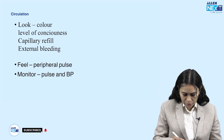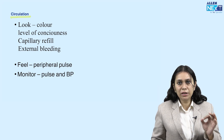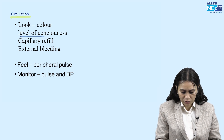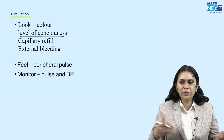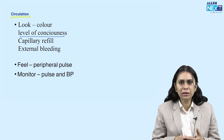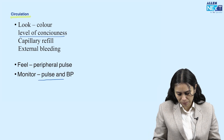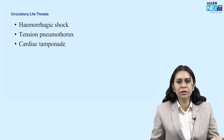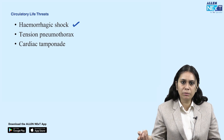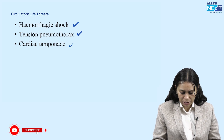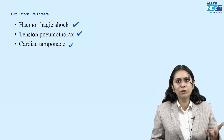Next is C — circulation. To assess circulation, check the color of the patient (pale, cyanosed), the level of consciousness, capillary refill time, any external bleeding, peripheral pulse, blood pressure, and pulse rate. Circulatory life threats include hemorrhagic shock, tension pneumothorax, and cardiac tamponade. We must diagnose the circulatory threat and manage accordingly.